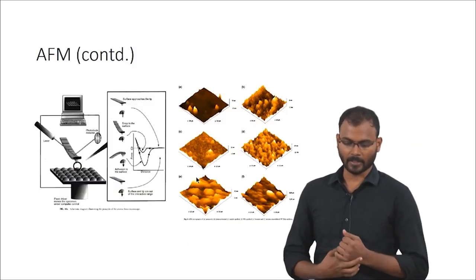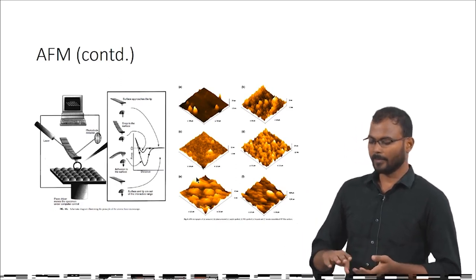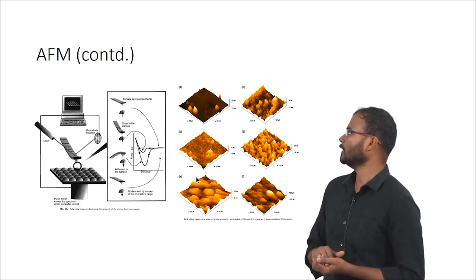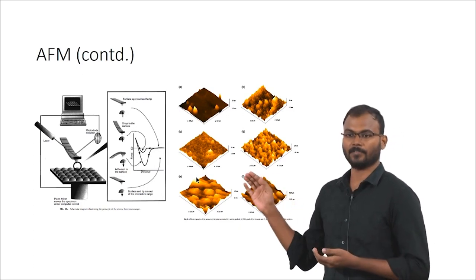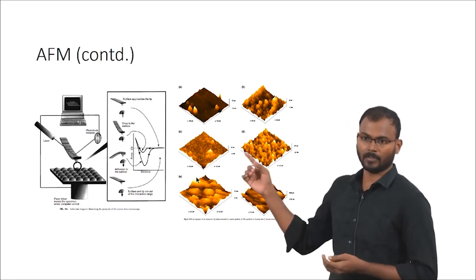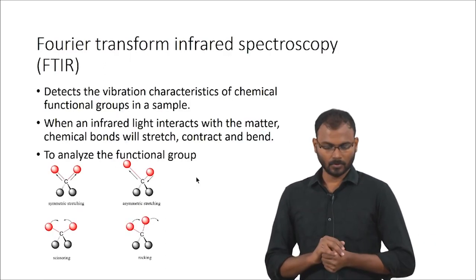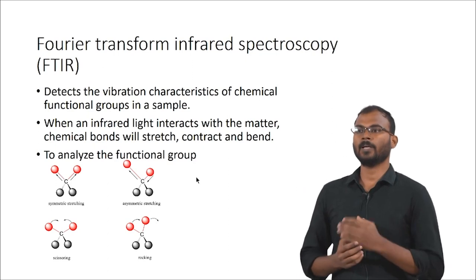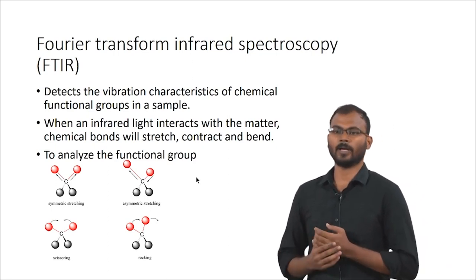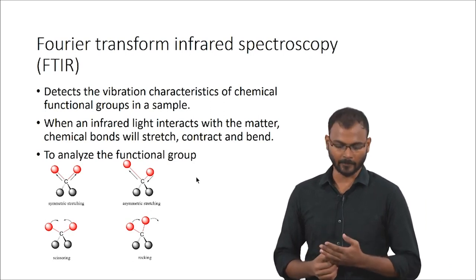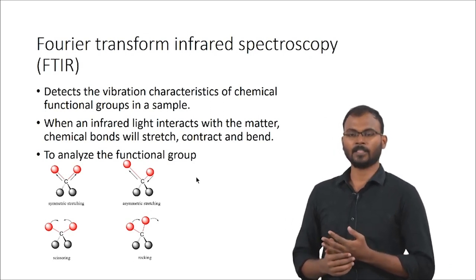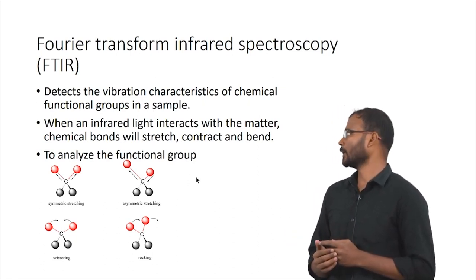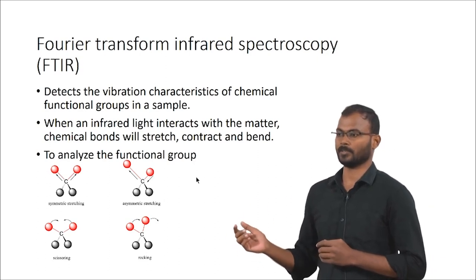The AFM schematic shows a cantilever scanning a surface; a plane surface appears smooth in the 3D contour image, and a modified surface with ridges appears as a rougher 3D contour image. Fourier transform infrared spectroscopy (FTIR): when a molecule is exposed to IR radiation, it undergoes vibrational stretching, contraction, and bending. Those molecular properties are converted into an FTIR spectrum.